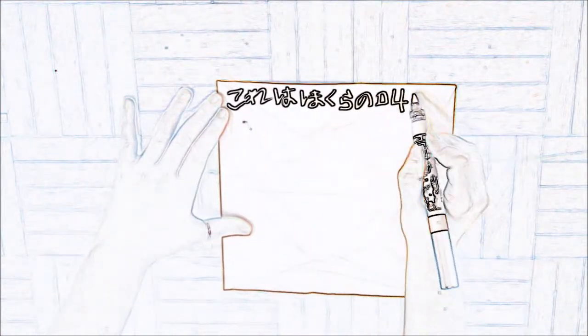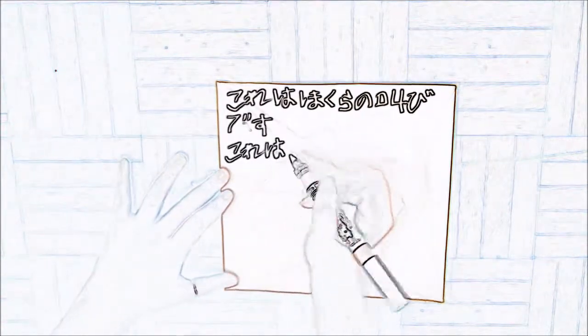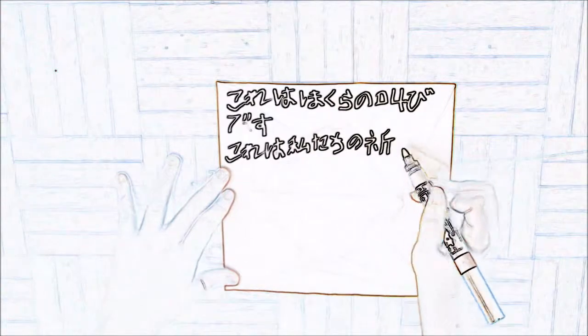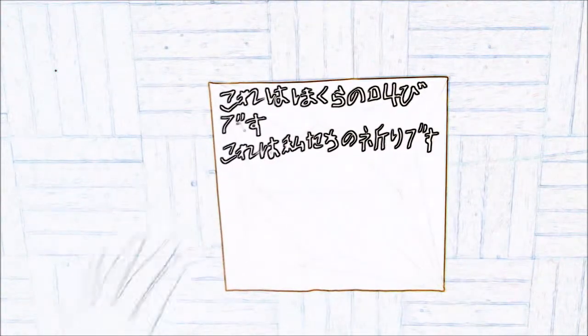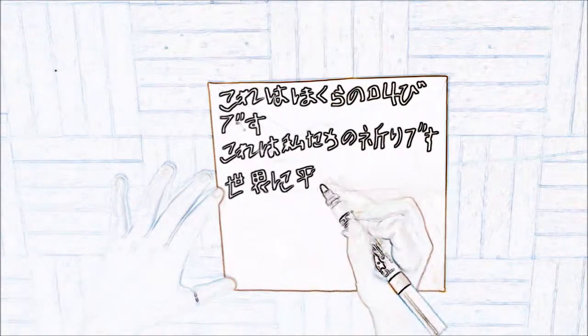In 1958, a statue of Sadako holding a golden crane was unveiled in Hiroshima Peace Park. The inscription at the bottom of the statue reads, This is our cry. This is our prayer. Peace in the world.